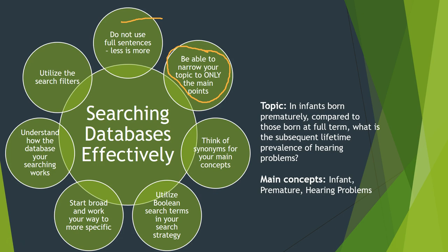Let's say your topic is: in infants born prematurely compared to those born at full term, what is the subsequent lifetime prevalence of hearing problems? There are a lot of words there — some important ones — but underneath I have the main concepts, which are infant, premature, and hearing problems. Out of that full sentence, those are my three main concepts. Those are the words I will type into a database — not 'effects of over time,' 'changes,' 'lifetime prevalence' — none of those words really mean anything. These are my core concepts.